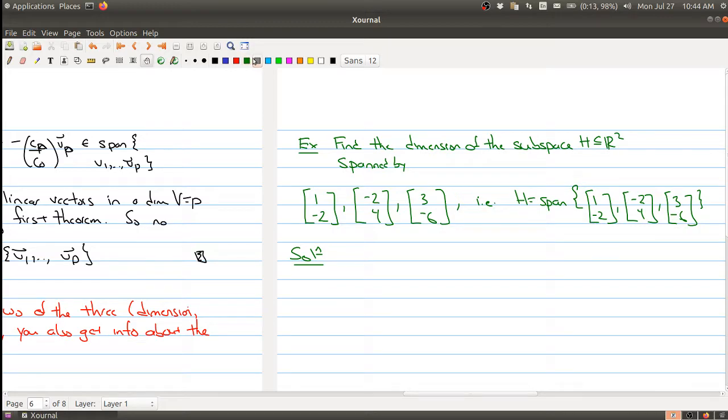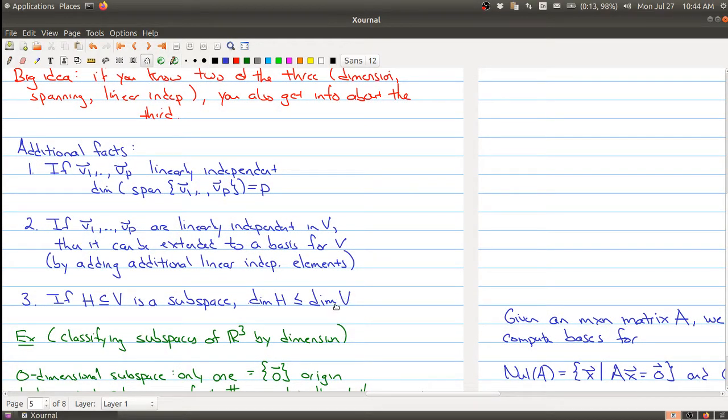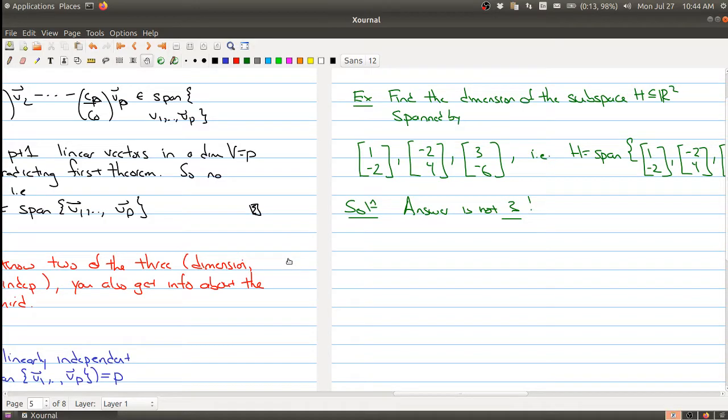Okay, so the first thing you have to be very clear is the answer is not 3. Okay, now there's a couple of ways to see why it's not 3. Well, one reason to see that it's not 3 is because it's sitting inside of an R² which is two-dimensional, so the dimension has to be 0, 1, or 2. So we have H is inside of R², so the dimension of H has to be 0, 1, or 2.